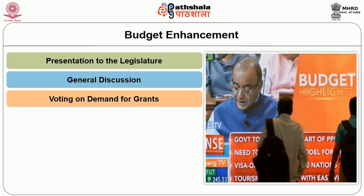The cut motions used in Indian Parliament are three in number. First, Token cut — introduced if the mover feels that some part of the demand is excessive; he moves a motion to reduce a demand by Rs. 100. It is symbolic in nature to voice a specific grievance. Second, Economy cut — when the mover feels that the total demand is excessive in nature and thus moves a motion for a specific cut in the total demand of the Ministry. Third, Policy cut — which can be moved if the member feels that the Ministry is not serving any worthwhile purpose and so it should be closed; for this, he moves the motion for reducing the total demand to Rs. 1.